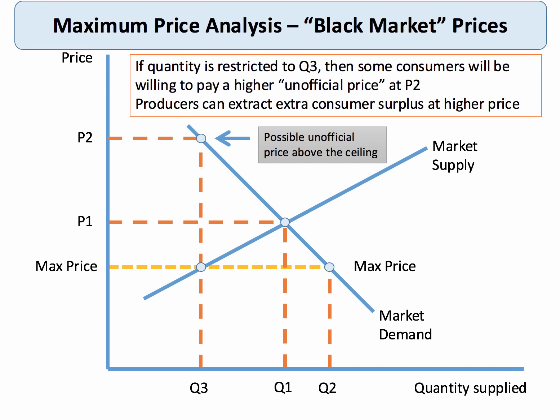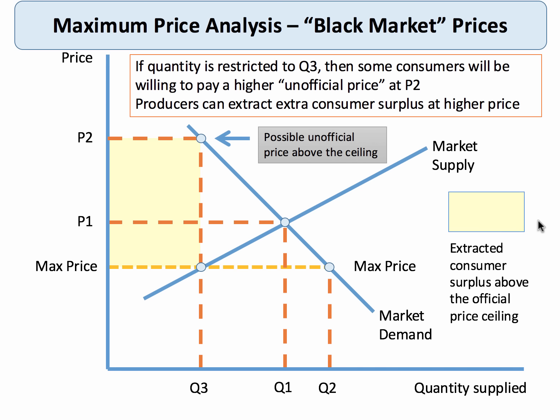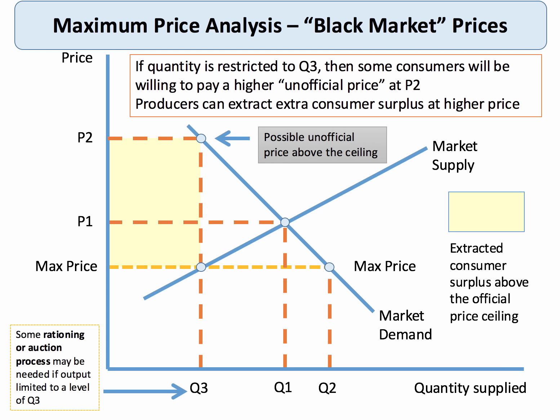That's a really key analysis point. If you restrict the quantity to Q3, some consumers are willing to pay an unofficial price of P2, and some producers may decide there's a lot of consumer surplus they could extract by charging a higher price in an unofficial shadow market. That shaded yellow area — if you charge P2 — represents the extracted consumer surplus above the official price ceiling. You may also need some rationing or auction process to keep output at Q3 and the price at the maximum, in the absence of an official black market.